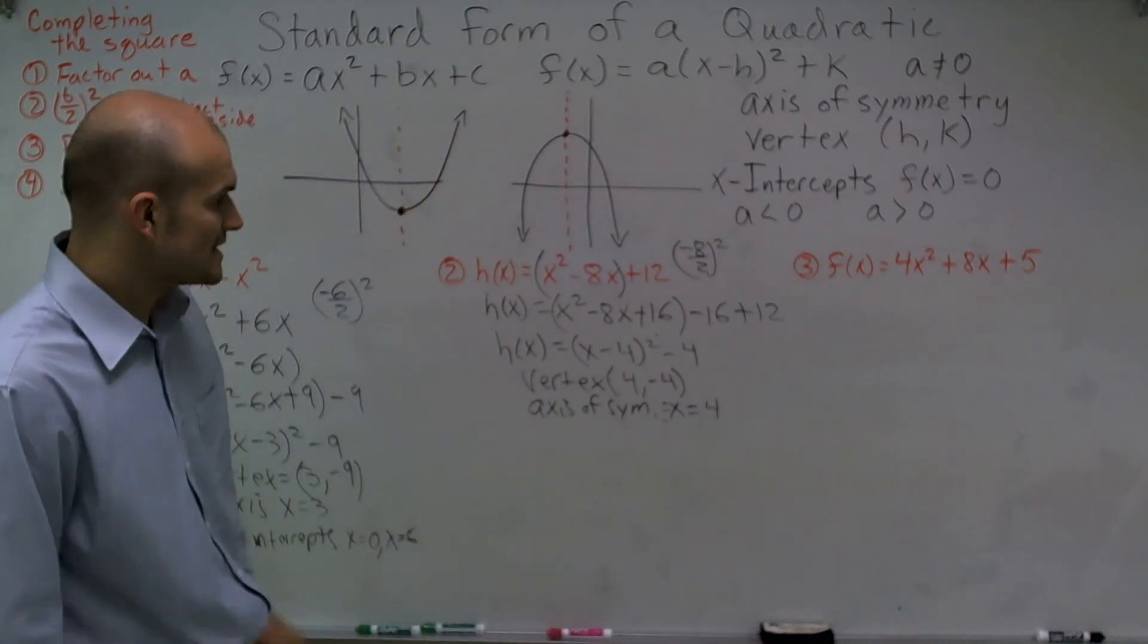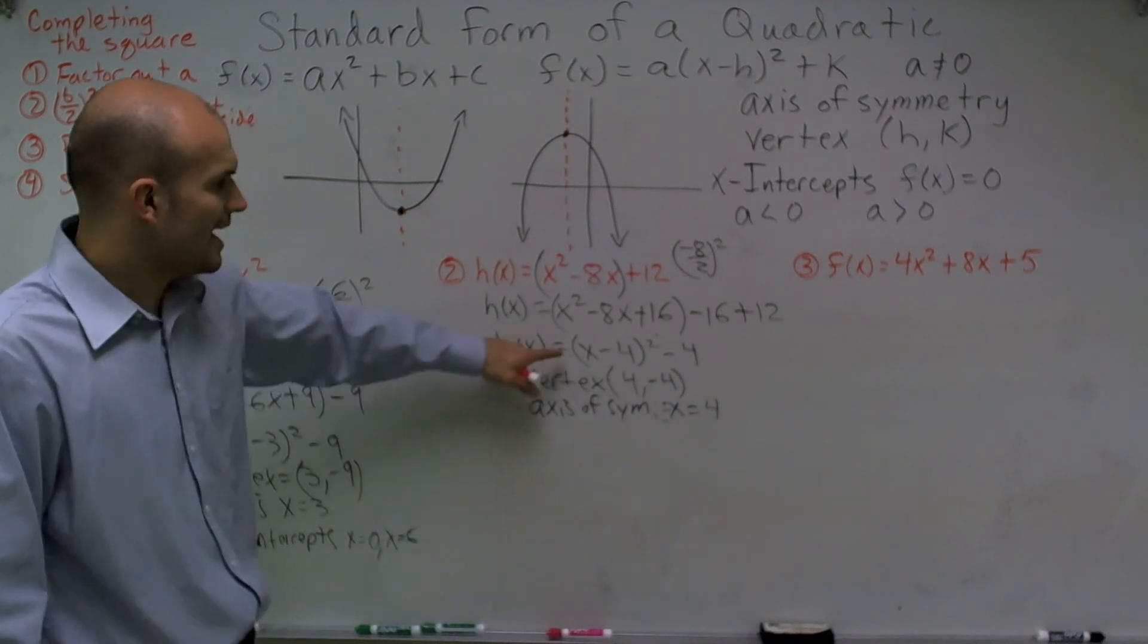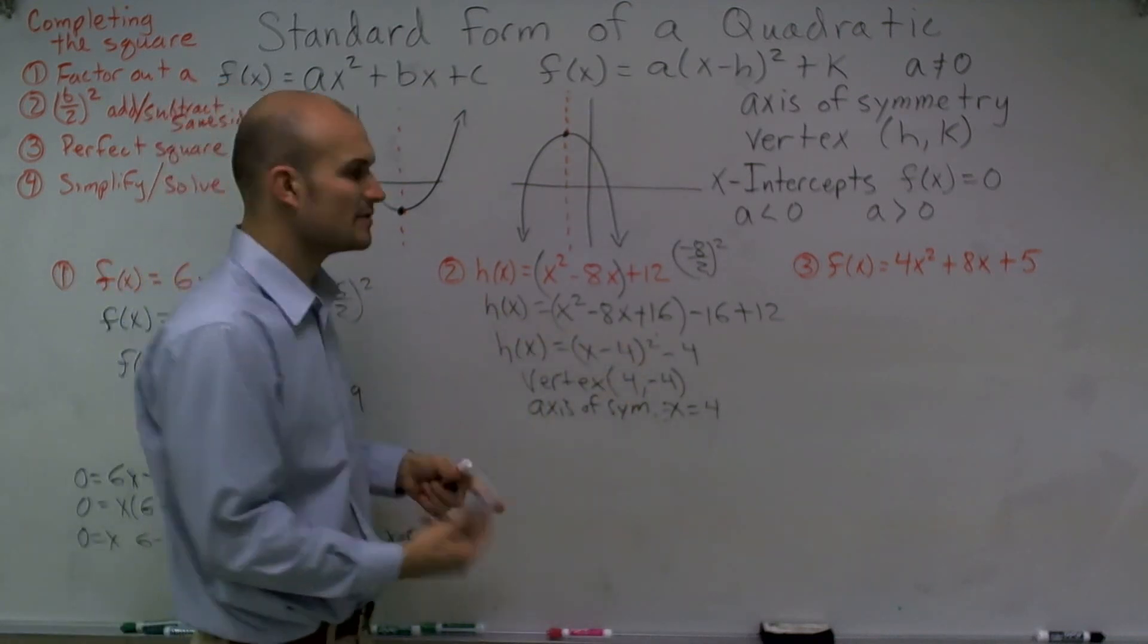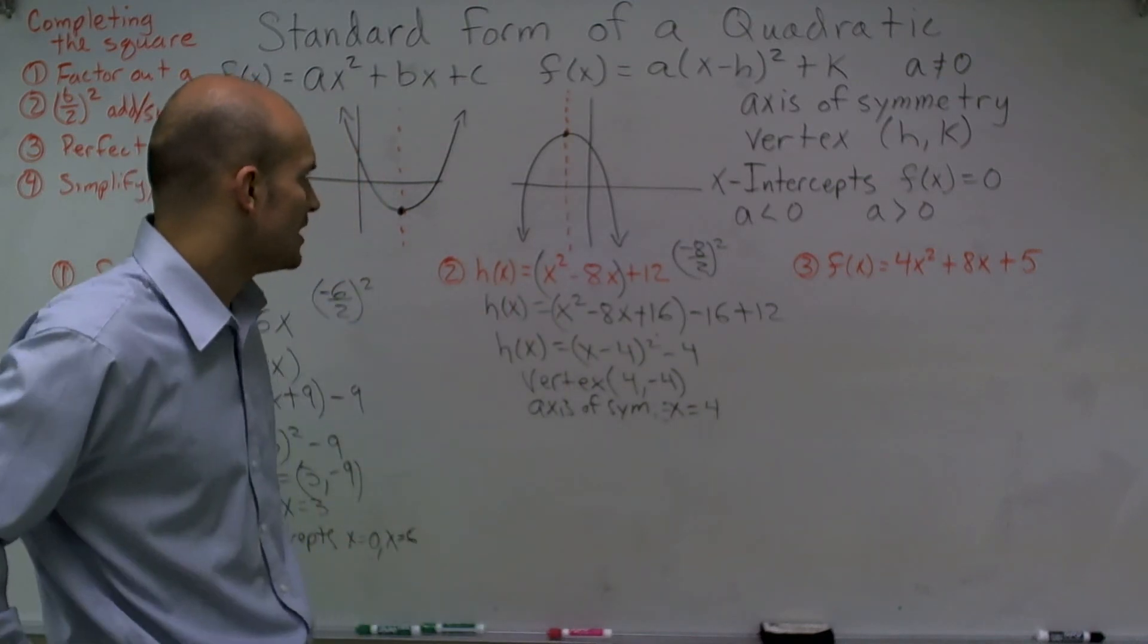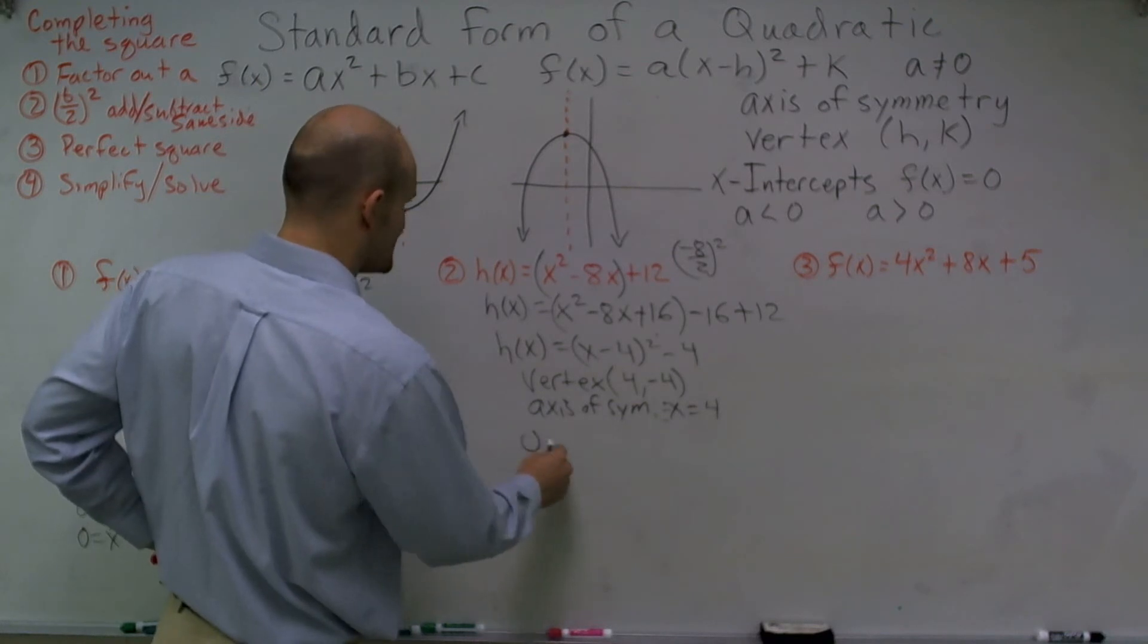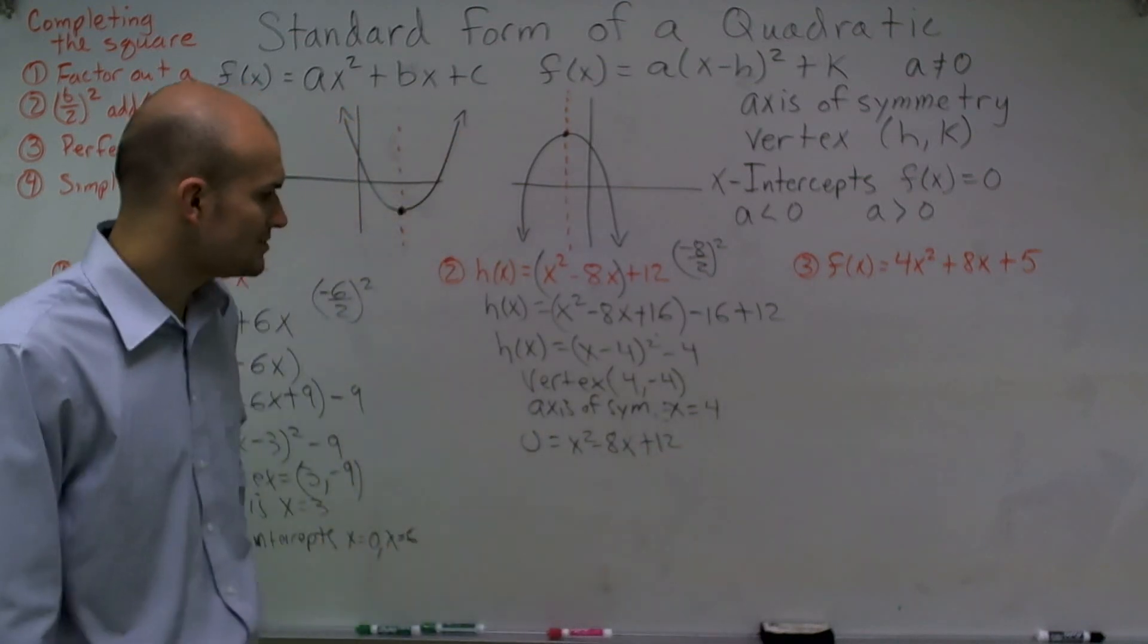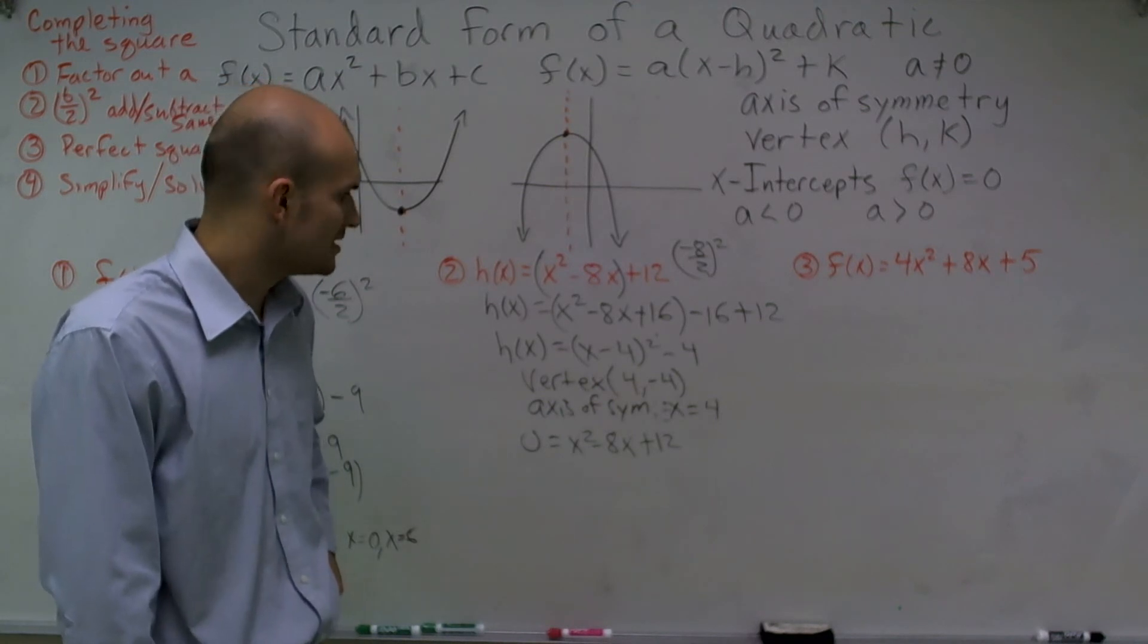To find the intercepts, we can set this equal to 0. Now, there's two ways we can do this. I could solve this, but I've already showed you how to do that. So I'm looking at this and I'm thinking this is going to be factorable. So let's see if it is. If I say 0 = x² - 8x + 12, I think of what two numbers multiply to give me 12, but add to give me negative 8. If I multiply -6 times -2...